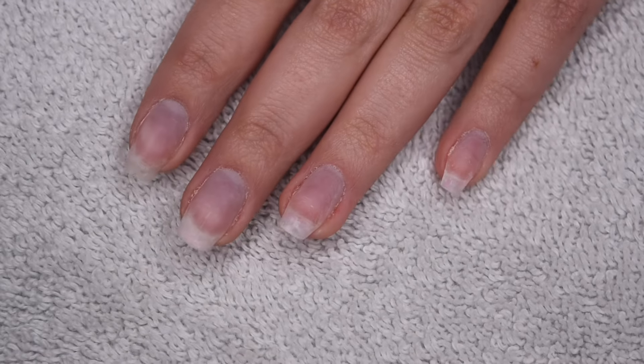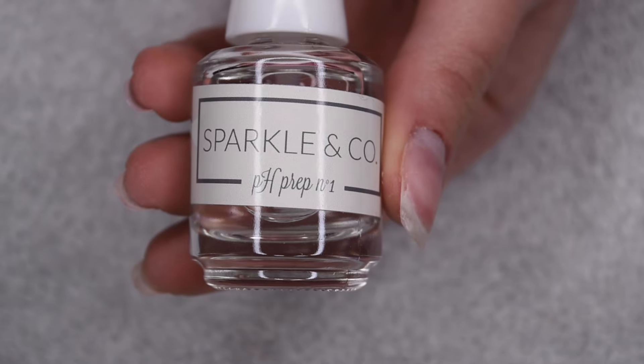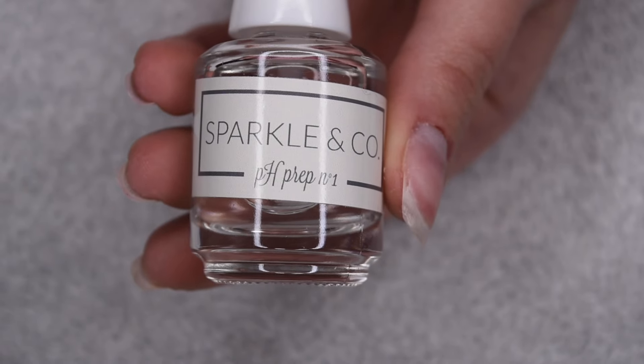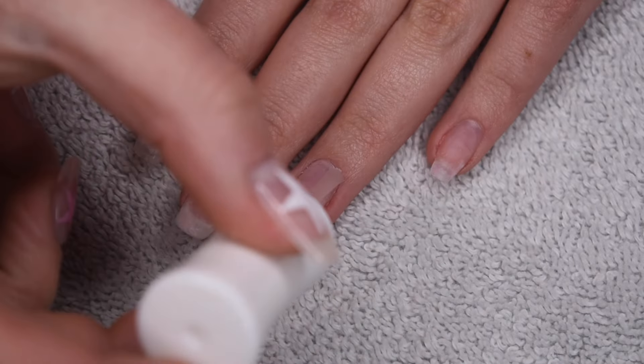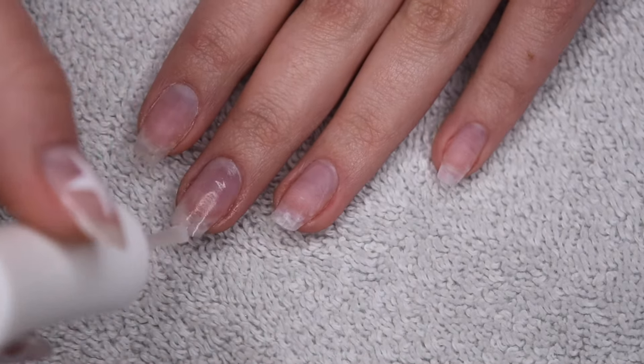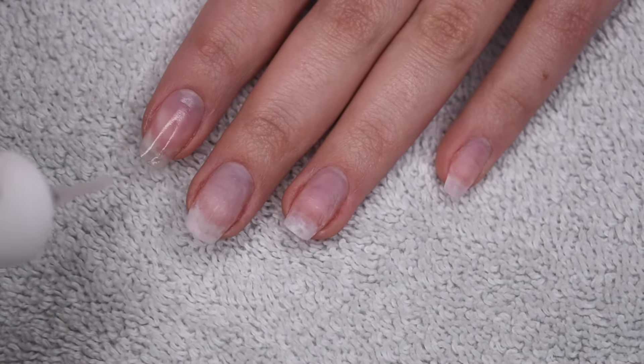So here I'm starting off with my cleaned and prepped natural nails. I did finally take my nail extensions off, so you can see that my natural nails have grown pretty long underneath. And I'm going to apply a layer of my pH prep liquid after pushing back the cuticles and buffing the surface of my nail. And this is just going to prep for the dip application.